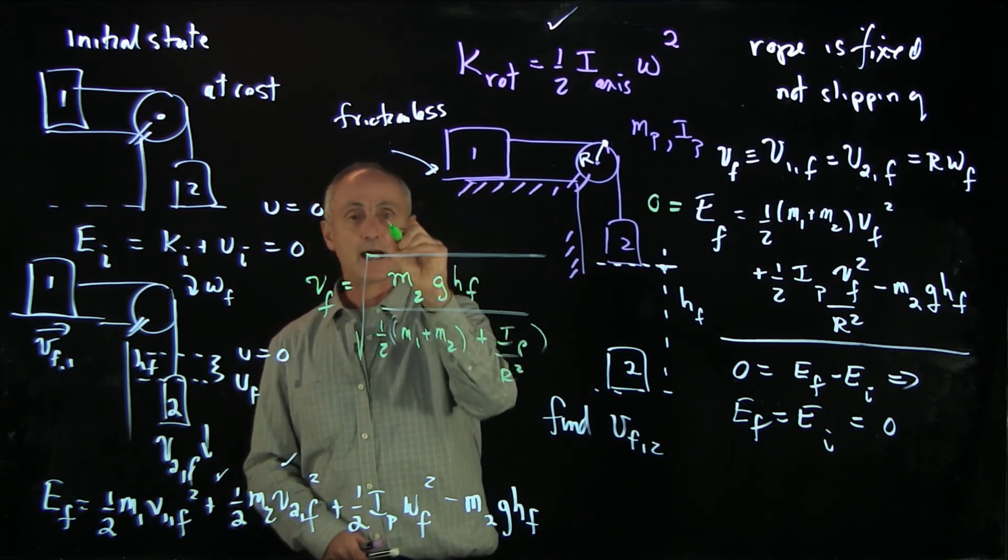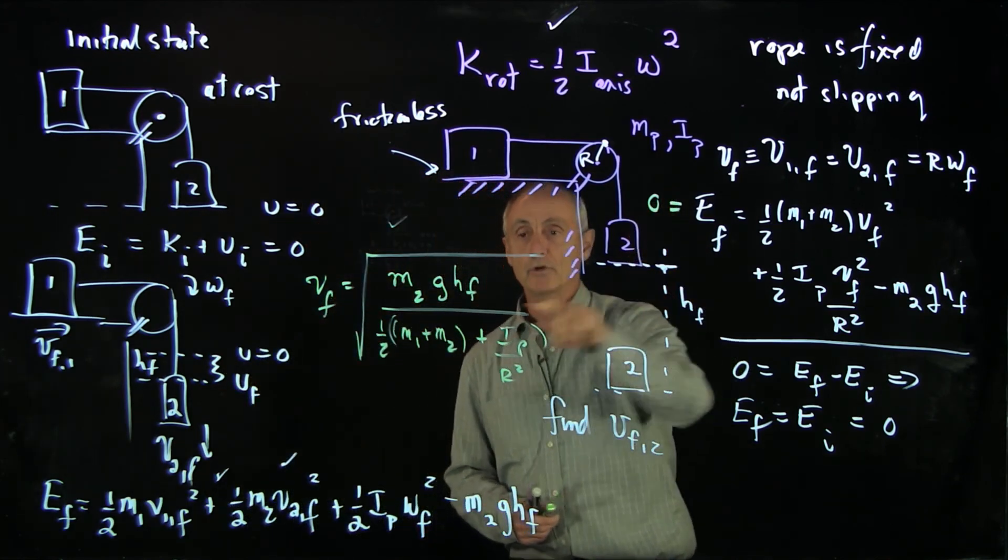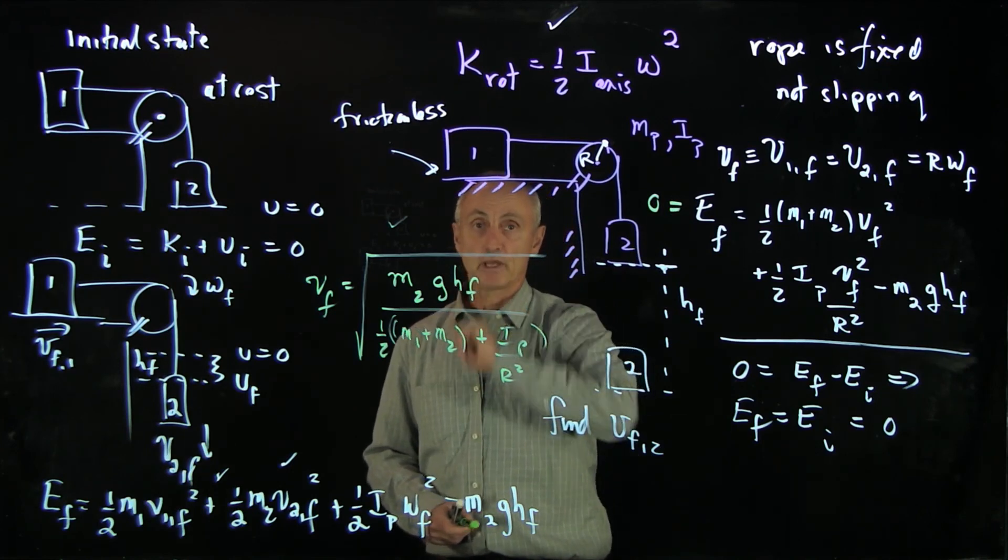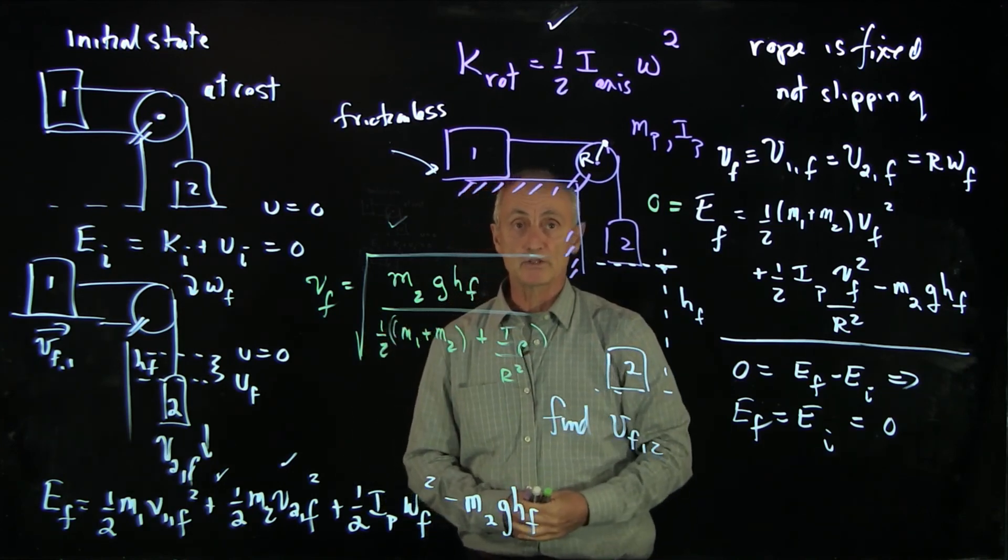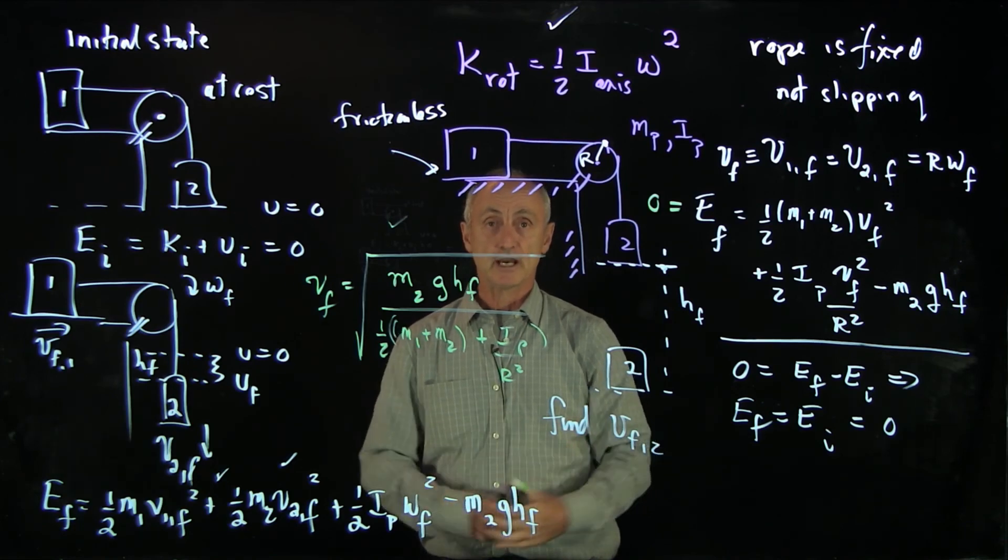I now have to take the square root of the whole thing. That's how I can find the velocity of block 2 when it's dropped down a certain distance h final. So here we've generalized our energy approach to include rotational kinetic energy.